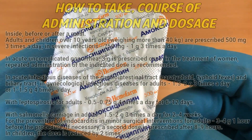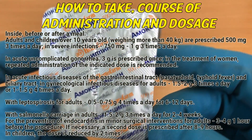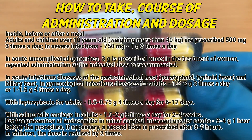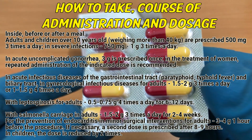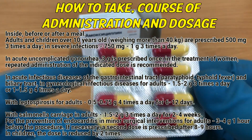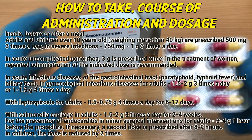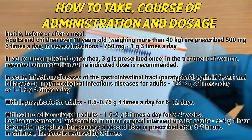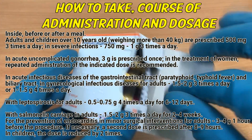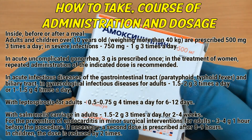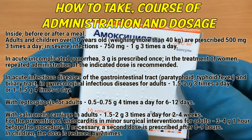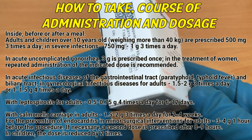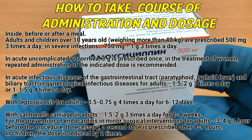How to take — route of administration and dosage: Taken orally, before or after a meal. Adults and children over 12 years old weighing more than 40 kg are prescribed 500 mg 3 times a day. In severe infections, 750 mg to 1 g 3 times a day. In acute and complicated gonorrhea, 3 g is prescribed once.